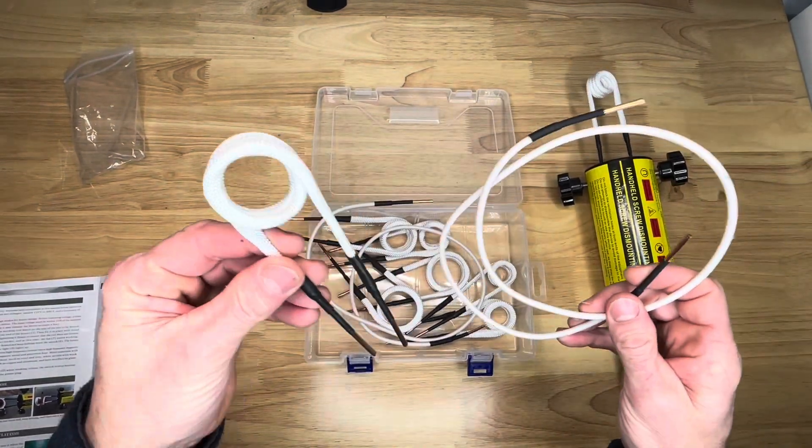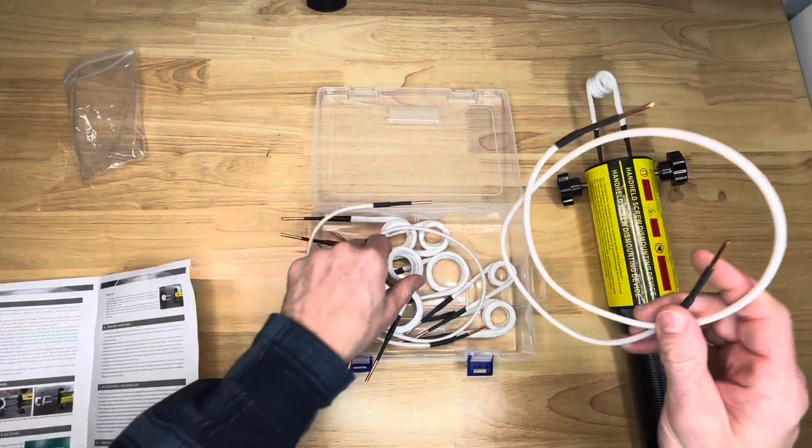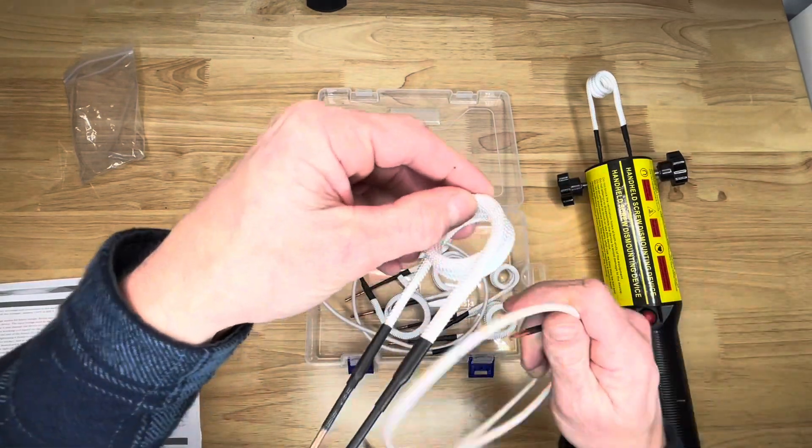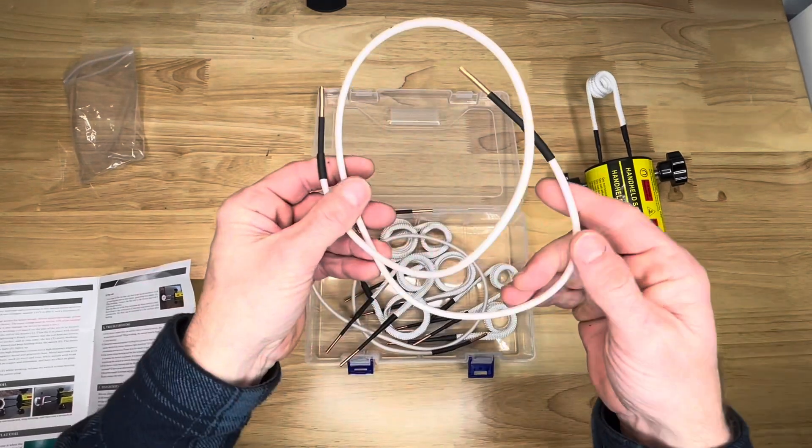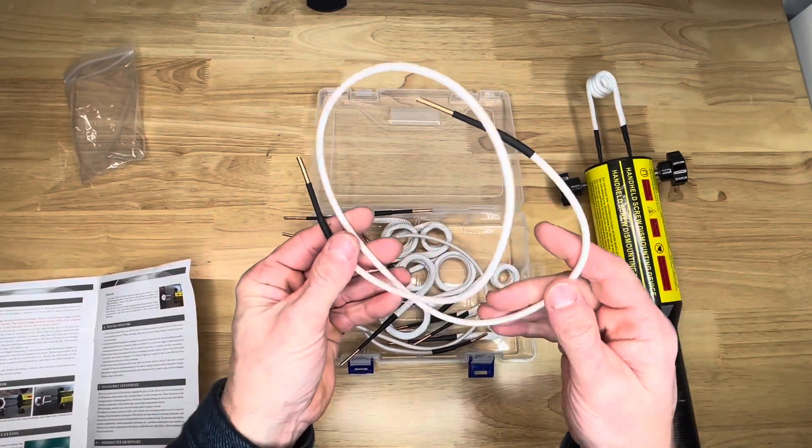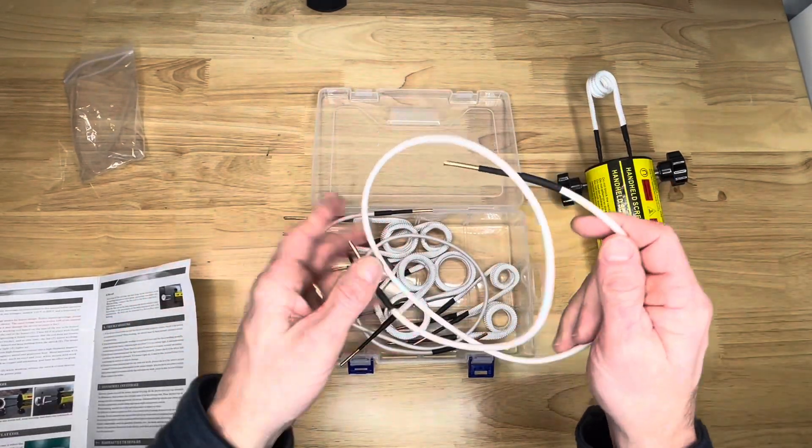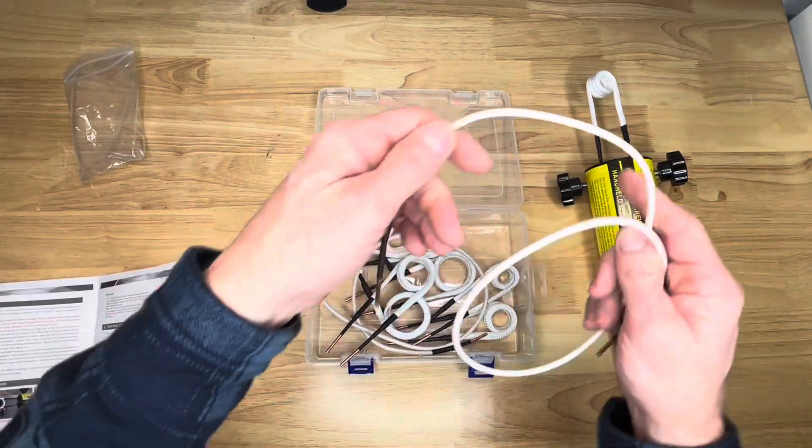These coils differ from these ones in that these are made to go over the surface you're trying to heat up. These ones here are for oddball configurations where you can't put it over the top, you have to sneak it in around it.